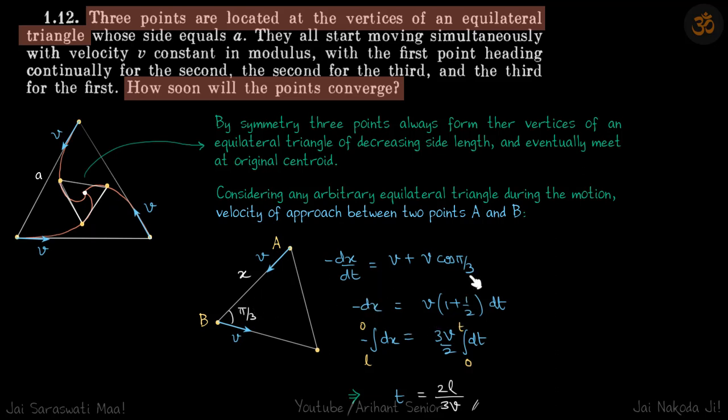Integrating, we have x from A to 0 and time from 0 to t. This gives us the time at which the distance between them reduces to 0. Integrating this, we get time as 2A/3V, which is our answer.